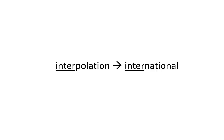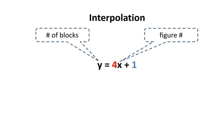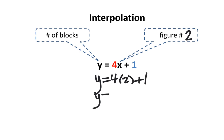If you recall, interpolation is really just a prediction — it is a prediction that occurs between what you already know. Think of international: international flights occur between different countries around the world. Let's say I want to interpolate the number of blocks in figure 2. Since x represents figure number, I can replace it with the number 2, and I'm going to put it in brackets. Next, you need to use BEDMAS, which means you're going to multiply before adding. So 4 times 2 is 8, and then 8 plus 1 is 9. Therefore, figure 2 contains 9 blocks.